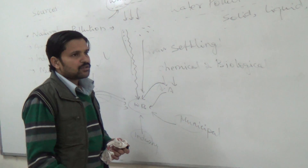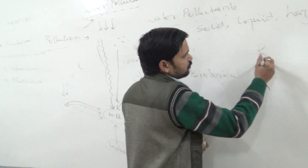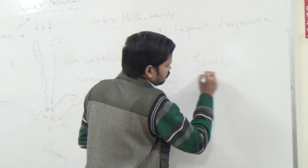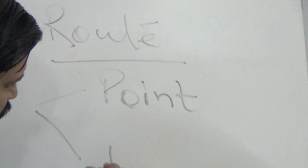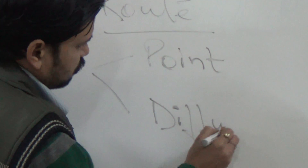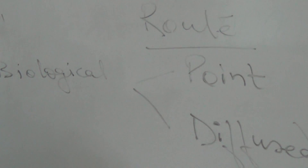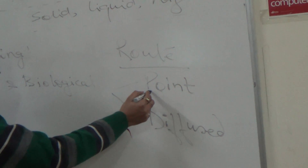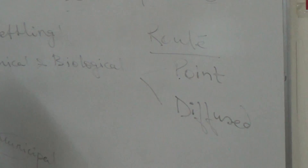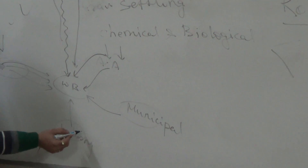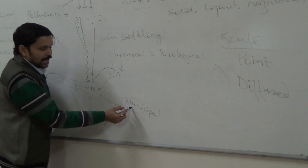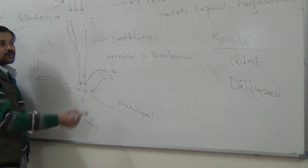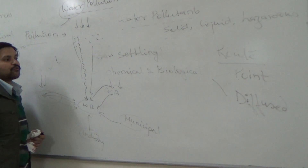If we discuss sources on the basis of their route, there are two types: point source and diffused source. Point source means any source whose outlet route is identified — for example, industry disposes its waste through a specific route, and municipal waste flows through a specific outlet into the water reservoir. These are point sources of water pollution.